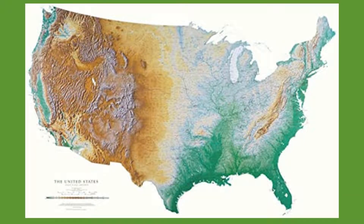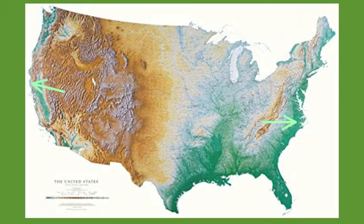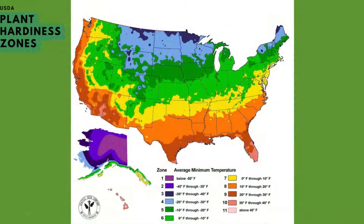The United States is vast, encompassing many different geographical regions and climate zones as it stretches from north to south and east to west. The USDA Plant Hardiness Zone Map divides the United States into 10 zones based on the average annual minimum winter temperature.